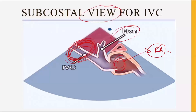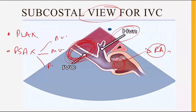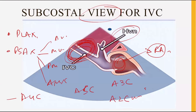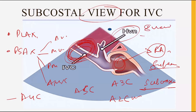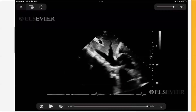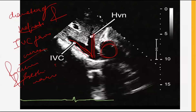In summary, we have the PLAX view, then the PSAX view at the levels of the aortic valve, mitral valve, papillary muscles, and LV apex, then the apical four-chamber, five-chamber, two-chamber, and three-chamber views, and finally the suprasternal and subcostal views — essentially eight basic views.